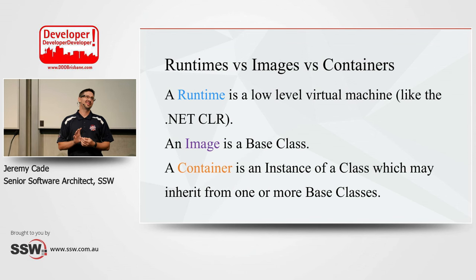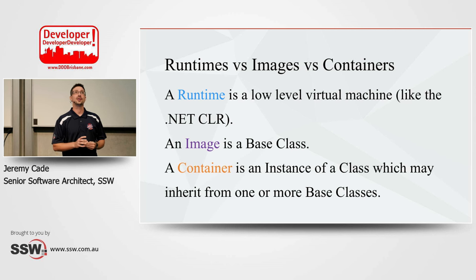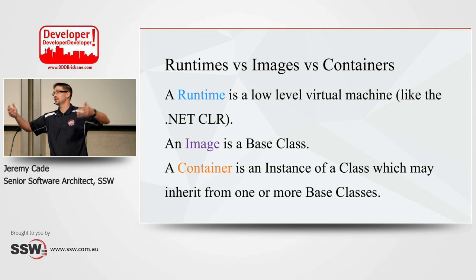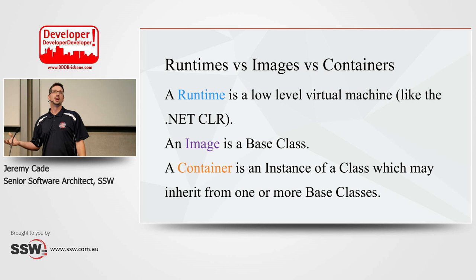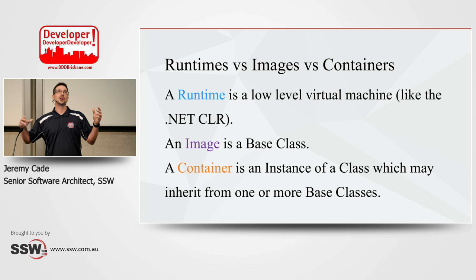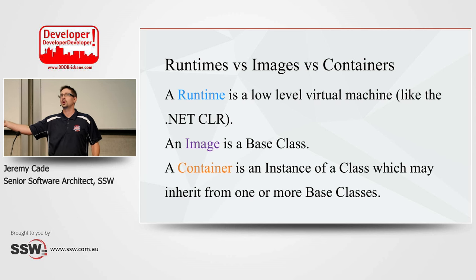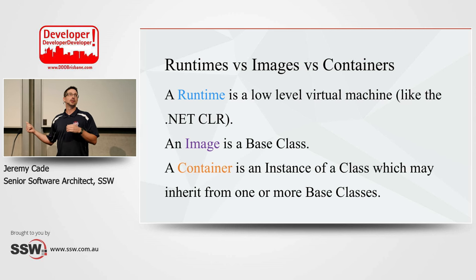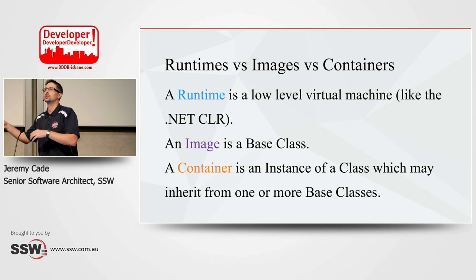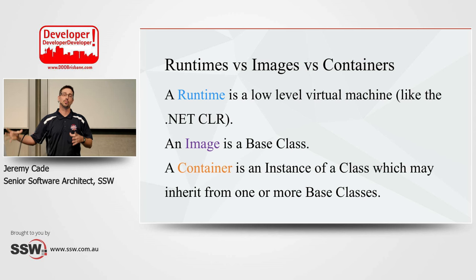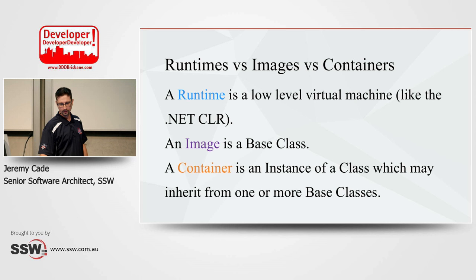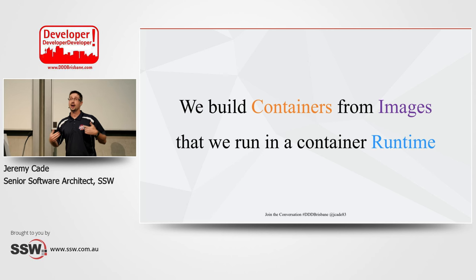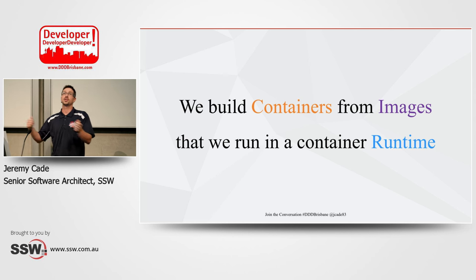So far we've been talking about what we're calling containers — we're really talking about runtimes. A runtime, to use an OO perspective, is like a low-level virtual machine — think of it like the .NET CLR, which can run a whole stack of different languages. That's our container runtime. We also have the concept of an image, which is like a base class: something we inherit all these properties from and build our application on top of. A container is essentially inheriting all this information from our base class to give us something we can deploy our application into.